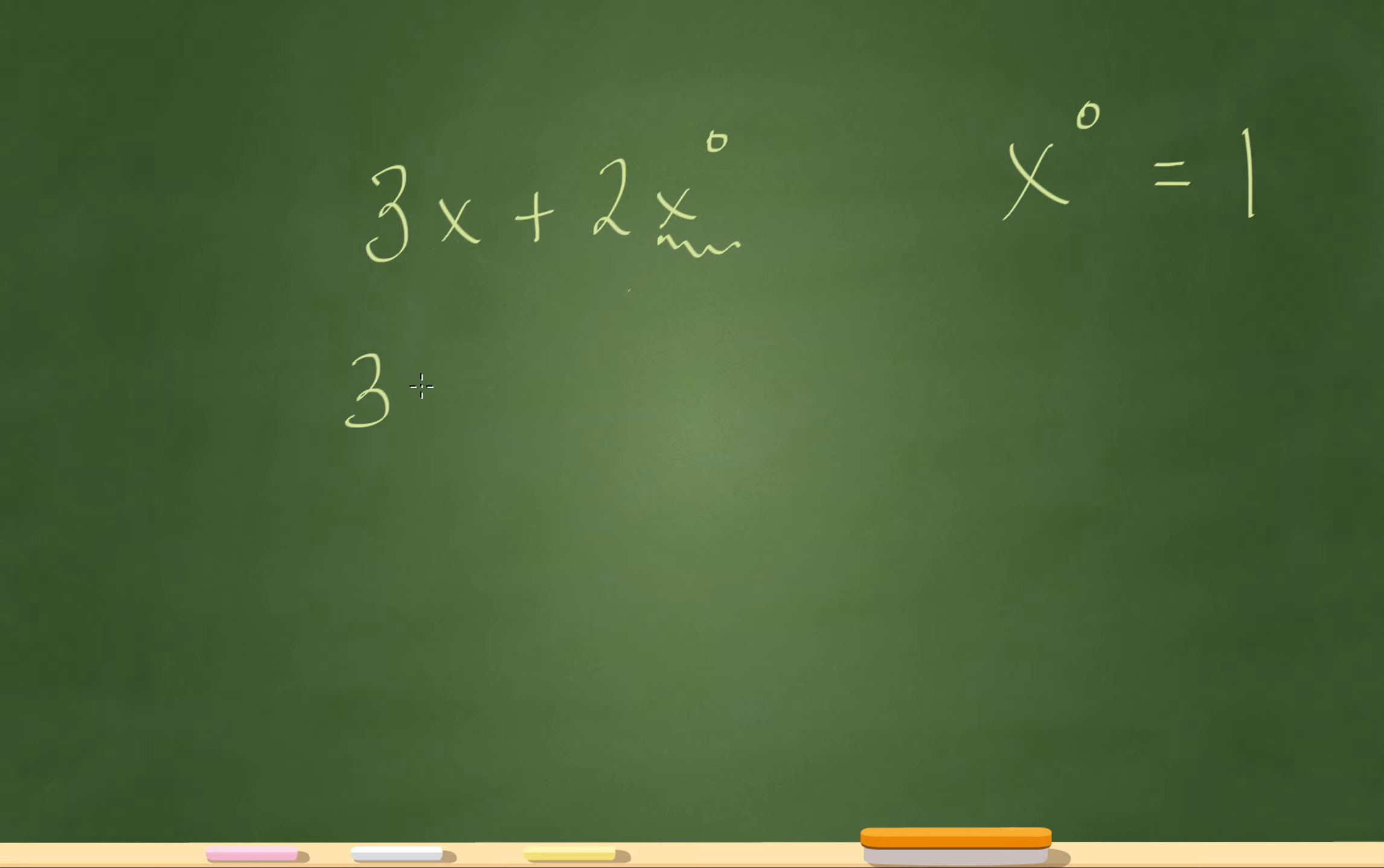So that is actually 1. So this is 3x plus 2 times 1. 2 times 1 is 2. So it's just 3x plus 2 for my final answer.